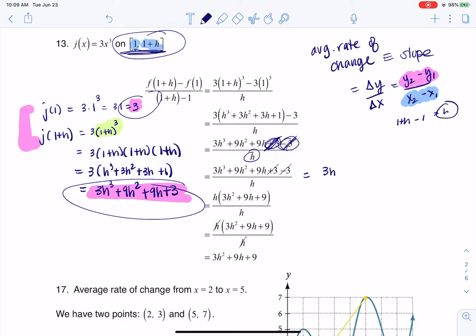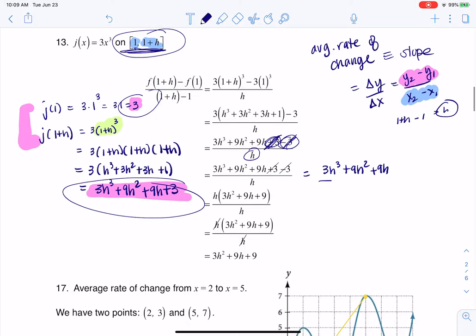This would have technically here been 3h cubed plus 9h squared plus 9h all over h, but I think you can see they have the h in common, so I can factor that out, and that's what I'm doing in this step. And then it allows me to cancel those h's, and that's what I'm left with. So I know that's a lot of algebra, I mean, it's part of the fun, we're called college algebra.